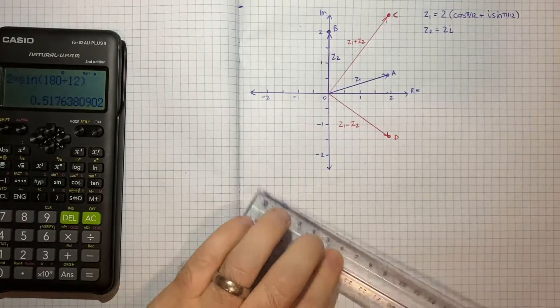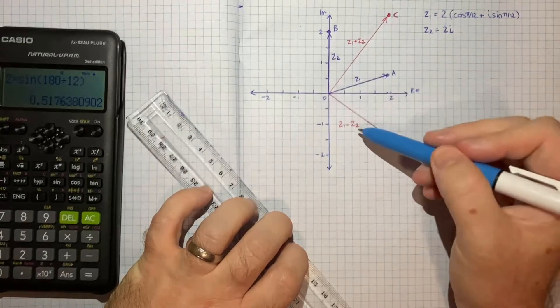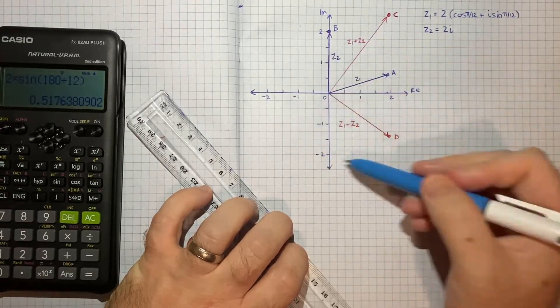So that's part 2 of the question done. That's plotting those two vectors, z1 plus z2, z1 minus z2, in the same Argand diagram.